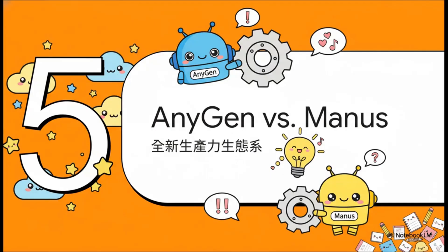很多人心里一定有个问题：Anygen不就是字节跳动版的Manus吗？这个问题的答案是不完全是。你不能把他们看成竞争对手，他们其实更像是一对完美的搭档。